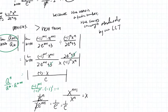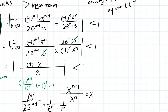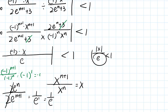Setting the ratio less than one: |x| / e < 1, which means |x| < e. Therefore, e is the radius of convergence.